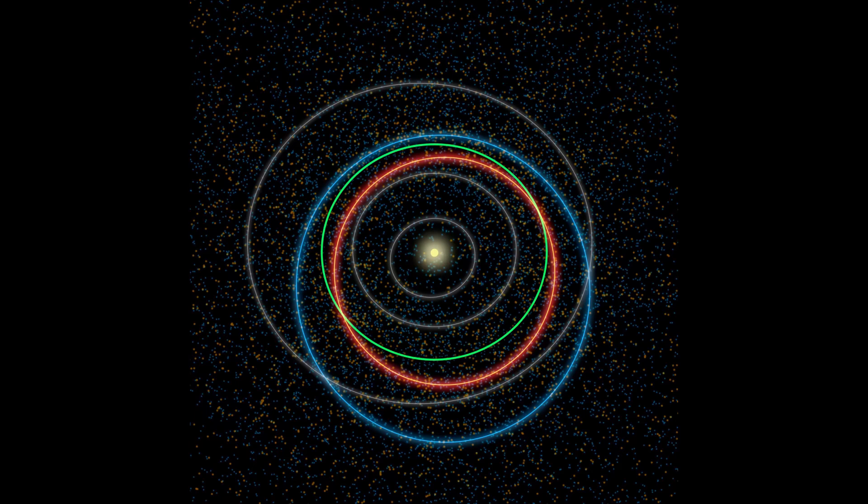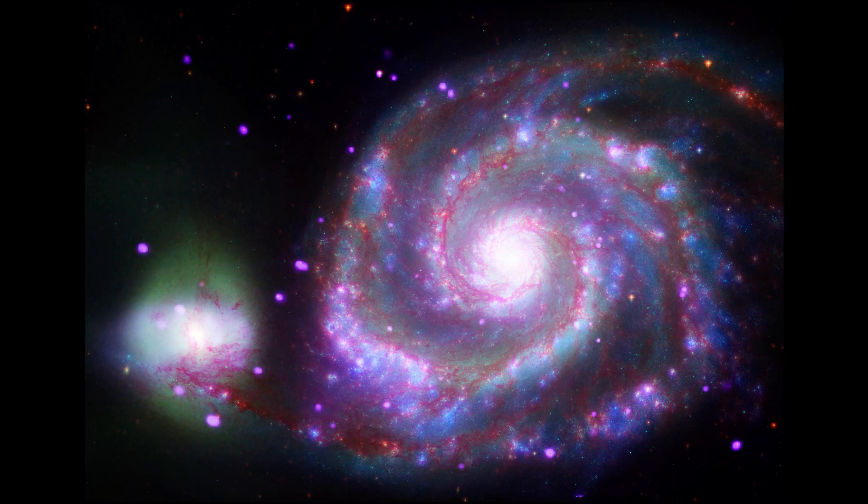Planets, moons, comets, all follow the same invisible rules. But when we look at galaxies, something suddenly doesn't add up.